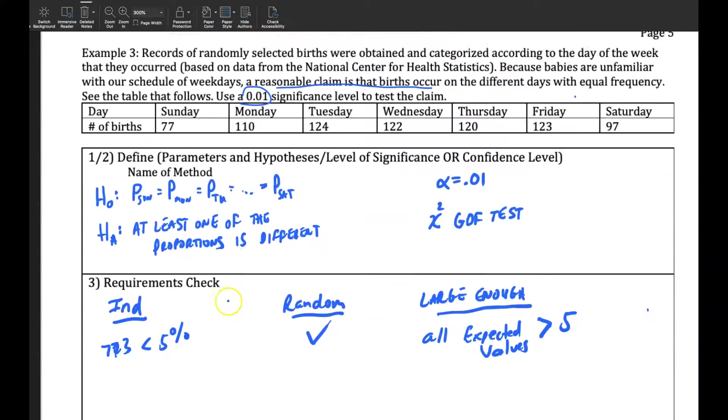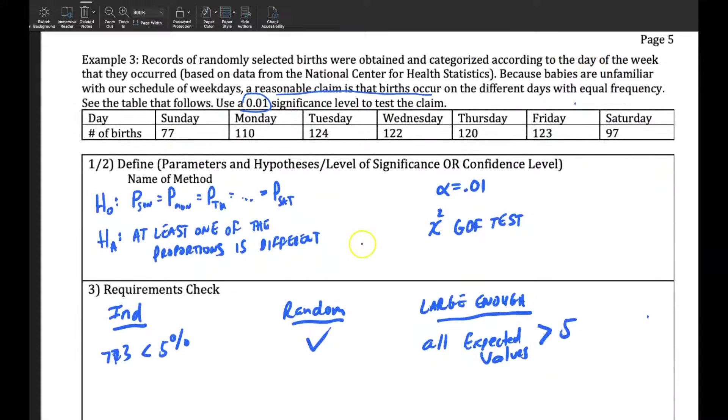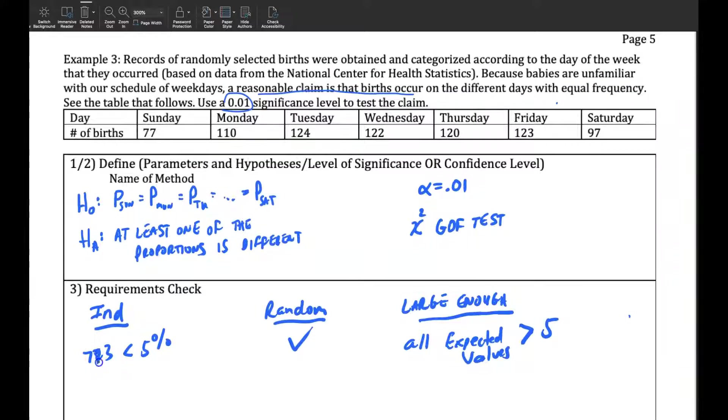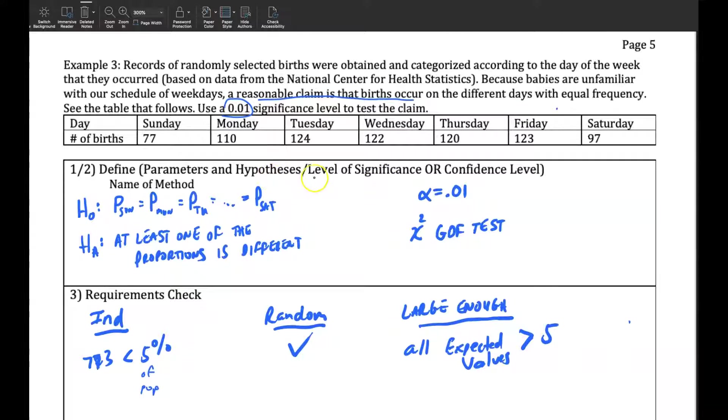We check the requirements. There's a total of 723 observations. The data was collected, random data was collected, and what day births happen on. And that number, 773, is less than 5% of the population for sure. It was randomly collected, where it says randomly selected,